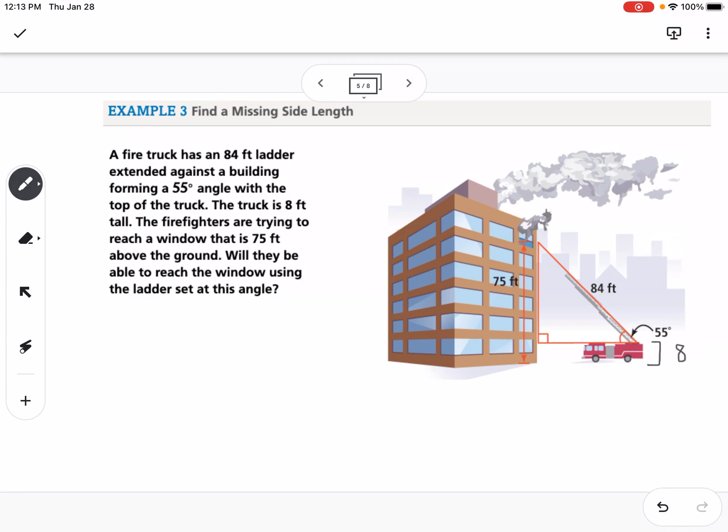Let's call that distance x. That distance plus 8, x plus 8, needs to equal 75 to reach the window. What we have to focus on is here's our angle theta, or 55 degrees. We are looking for the side that is opposite that angle, and we know the hypotenuse, which is 84. If you think of SOHCAHTOA, what's opposite and hypotenuse? That would be sine. So that tells us what trig function we need to use.